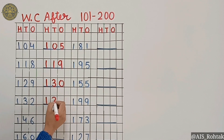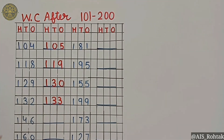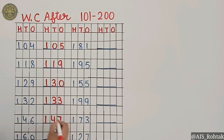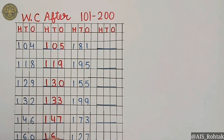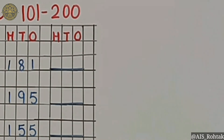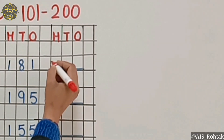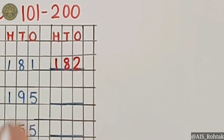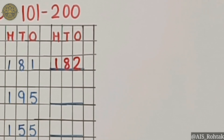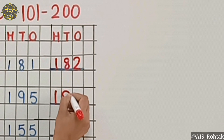It's 133. 146 — so the after number will be 147. 160 — after number will be 161. 181 — after number will be 182. 195 — after number will be 196.